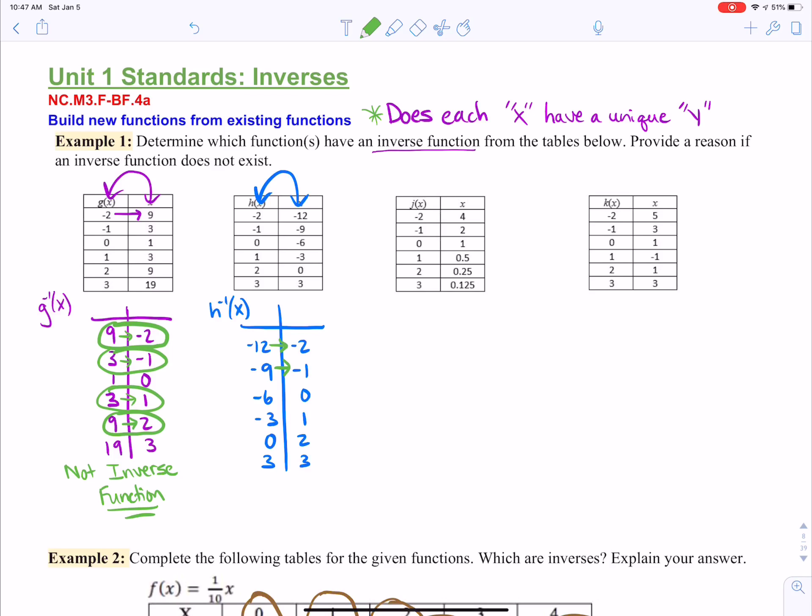Negative nine goes with negative one. And again, we don't see anywhere in the list that that would be another number that it would be paired with. And then it keeps going down the list. So each one of these values does have a unique y. So that means this one would be a function. So let's just say yes, and move on to the third one.